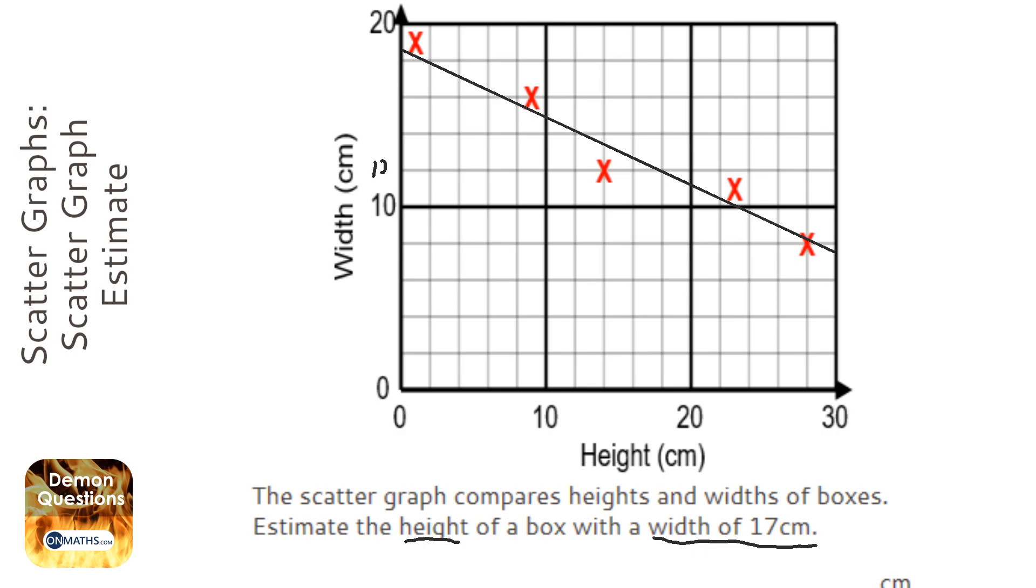So we've got to check the scale first, and it seems like it's going up in 2s. Let's just check that. Yep, it's going up in 2s. So what I want to do is draw a line across at the width of 17, which would be roughly here. I'm going to stop when it hits the line of best fit, and I'm going to draw a line down.